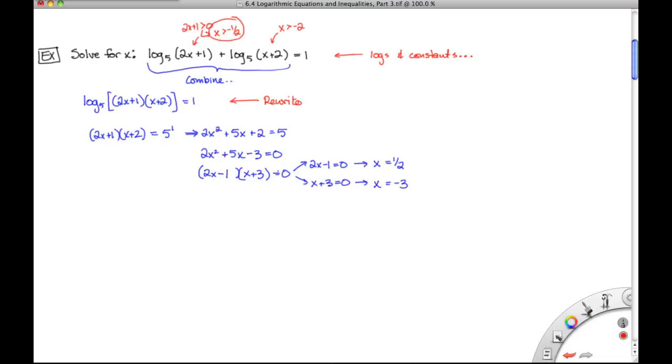And again, we check these solutions against our restriction, which was x has to be greater than minus 1 half. And this is a problem, because x equals negative 3 is less than negative 1 half. So we're going to have to lose that one. So our only solution ends up being x is equal to positive 1 half. And that's our answer.